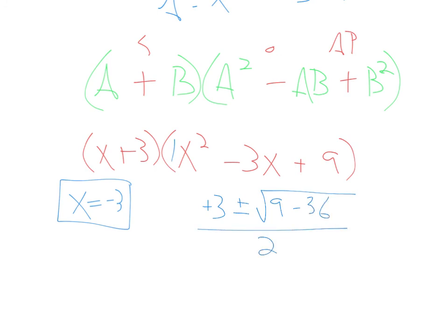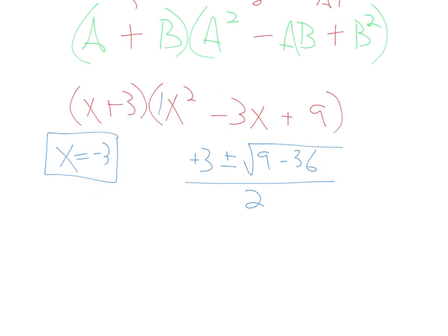Let's clean this up a bit. I've got three plus or minus the square root of nine minus 36, which is negative 27, so i√27 all over 2.